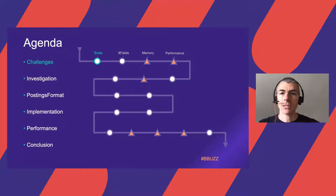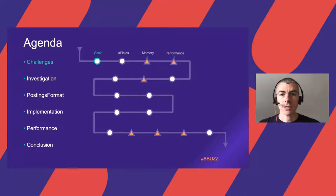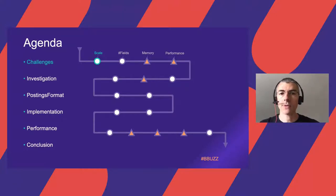Here is the agenda. On the left, the agenda sections, and on the right, the journey map. Each agenda section corresponds to a line in the map. The white bullets represent challenges and solutions, while the orange triangles represent issues and obstacles. That's a big journey, filled with challenges, issues, and solutions.